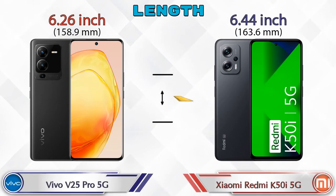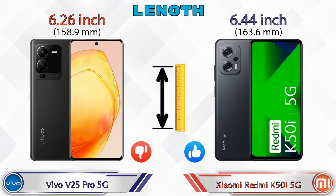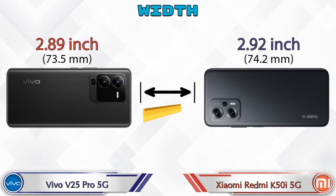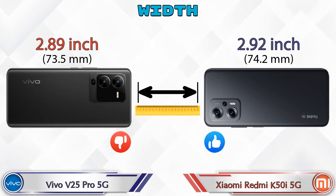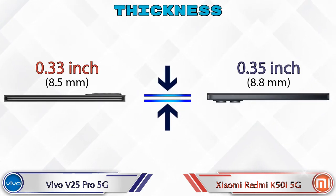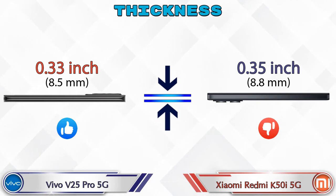Talking about the length of both phones, V25 Pro 5G has 6.26 inches and Redmi K50i 5G has 6.44 inches. Width: V25 Pro 5G is 2.89 inches and Redmi K50i 5G is 2.92 inches. Thickness: V25 Pro 5G has 0.33 inches and Redmi K50i 5G has 0.35 inches, which is bigger than V25 Pro 5G.